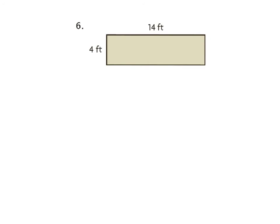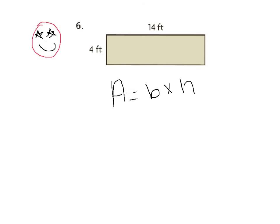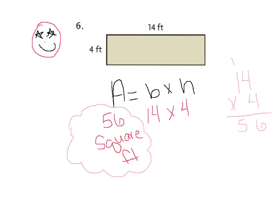Here's number six. To check that you've watched tonight's video, next to number six draw your very best smiley face and give it some star eyes. Now let's look at number six: find the area of this rectangle. Our area formula is Area equals base times height. My base was 14 and my height was 4, so I multiplied 14 times 4. Make sure you're checking your regrouping. The answer is 56 square feet.